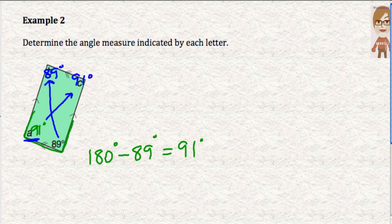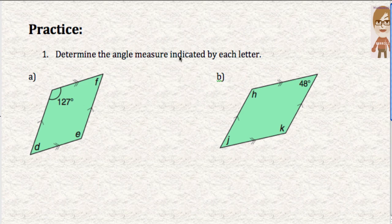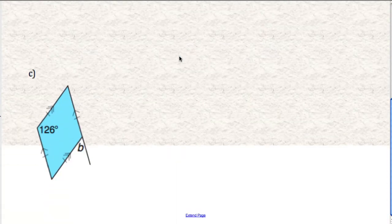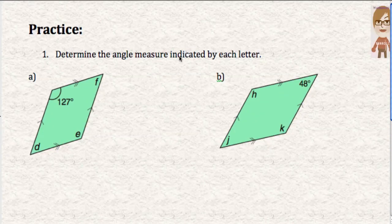So those properties help you determine all the missing measures in parallelograms. Now what I'd like you to do is just take a look at your practice questions. And just make sure that you're able to find all the missing measurements just in these three diagrams. There's only three diagrams for you to try and then you can go on to the next lesson. Thank you.